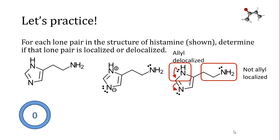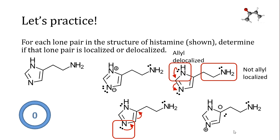Now let's consider the last lone pair of the molecule. I'm redrawing histamine so that we can use a structure that hasn't been cluttered up. This lone pair on the bottom also looks like it's on an atom that's neighboring to a pi bond, and we may think we can draw a resonance structure that will involve that lone pair. It's tempting to assign it as a delocalized lone pair. However, there are two reasons that it's not. First, there's something particularly terrifying about the resonance structure that we just drew.